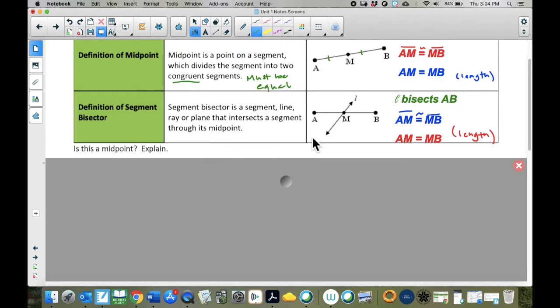A segment bisector is the thing which divides it in half. A segment bisector can be a line, it can be a segment, a ray, a plane, it can be a point. It's just basically anything that cuts it in half. If it's cutting it in half, that is called a segment bisector, and it is cutting it through the midpoint.